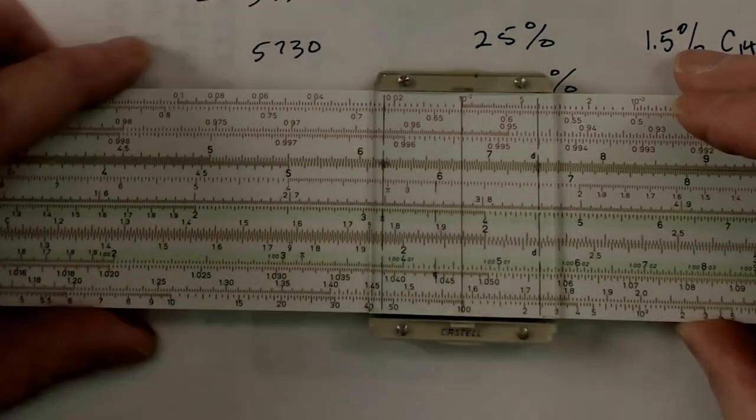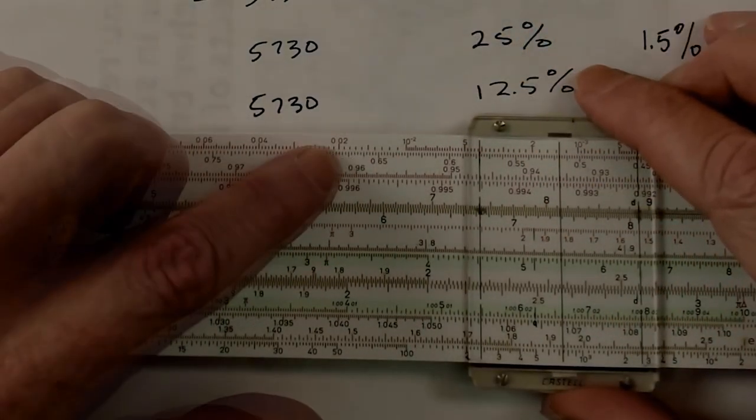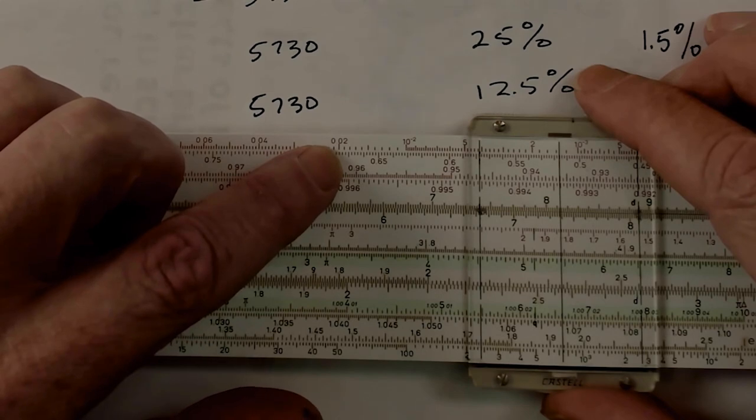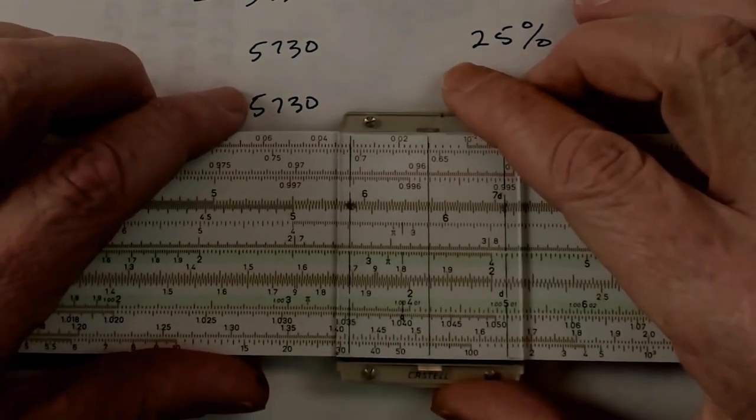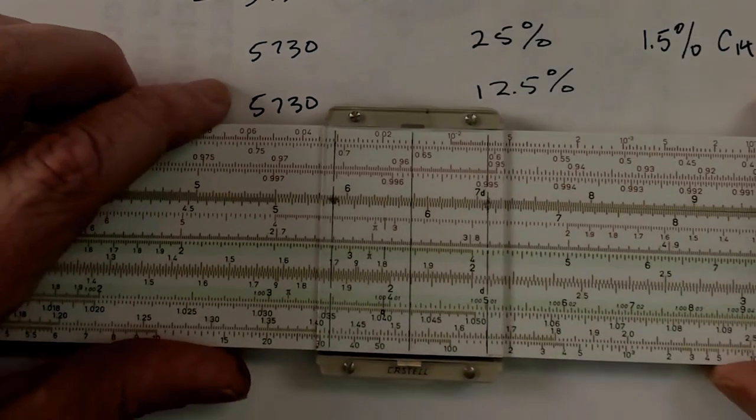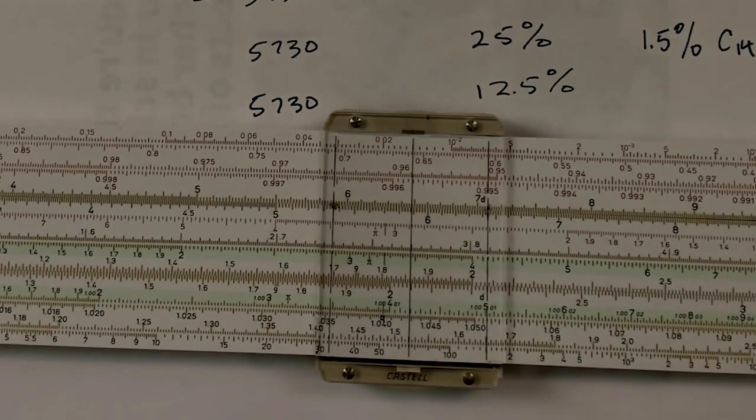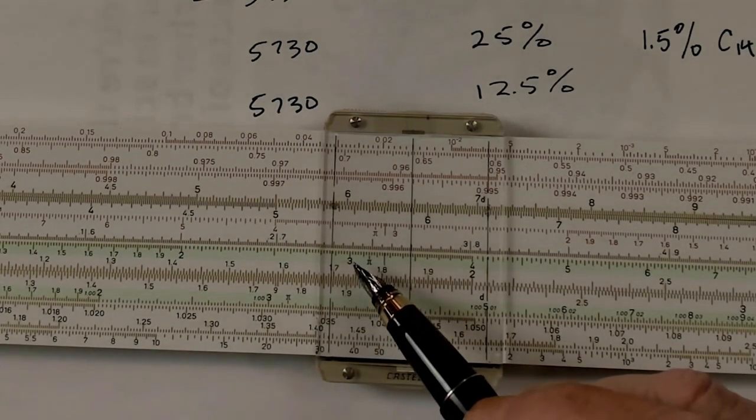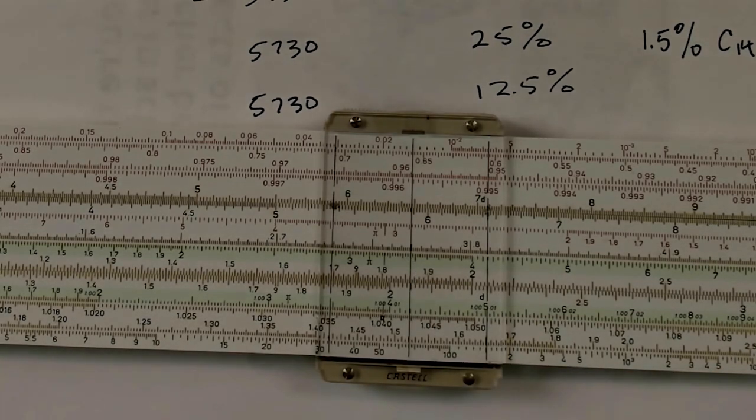So that's 25%, but we don't have 25%. What we have is 1.5%. 1.5%, 1% would be 10 to the negative 2, which is right here. 2% would be right next to it at 0.02. And 1.5% would be right in the middle. Now we read down to our C scale and we see 3, 4, 6. All right, so where do we put our decimal place?